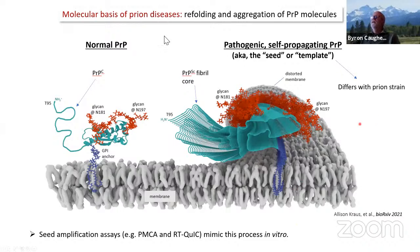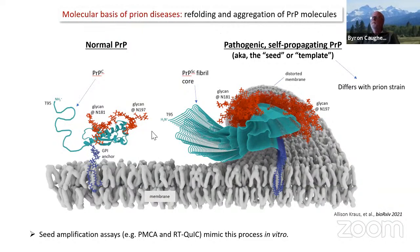A key issue here is what a prion is and what the molecular basis of prion diseases is. The molecular basis of prion diseases involves refolding and aggregation of PRP molecules. The normal PRP or prion protein, based on NMR spectroscopy, has well-folded corkscrew-like structures. It's a string of amino acids with a well-folded region, some floppy less-structured regions, and it's tethered to biological membranes by a lipid anchor, and it has sugars on it.